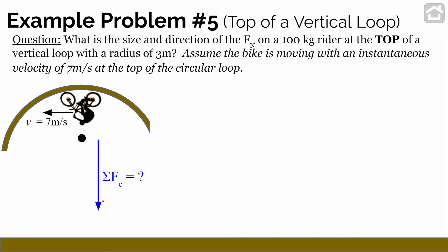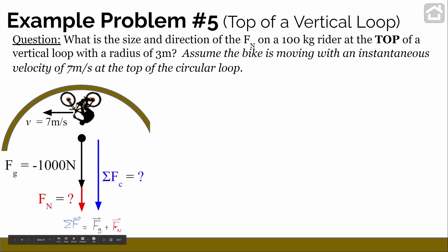We know the sum of the forces has to point down, so what are the forces on the biker at this point? All objects with mass feel a gravitational force — a 100 kg rider feels approximately negative 1000 N pulling them down. If they're in contact with the vertical loop, the loop pushes back with a normal force, and since the loop is above them at the top, that normal force also points downward. We'll calculate how big the normal force is next.